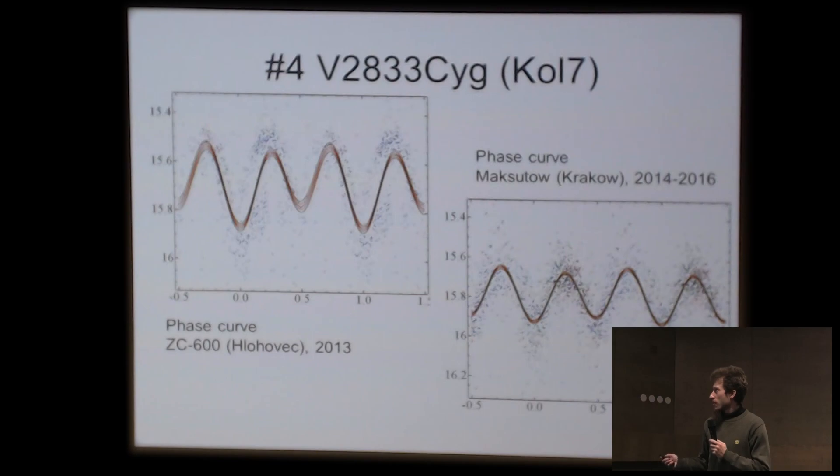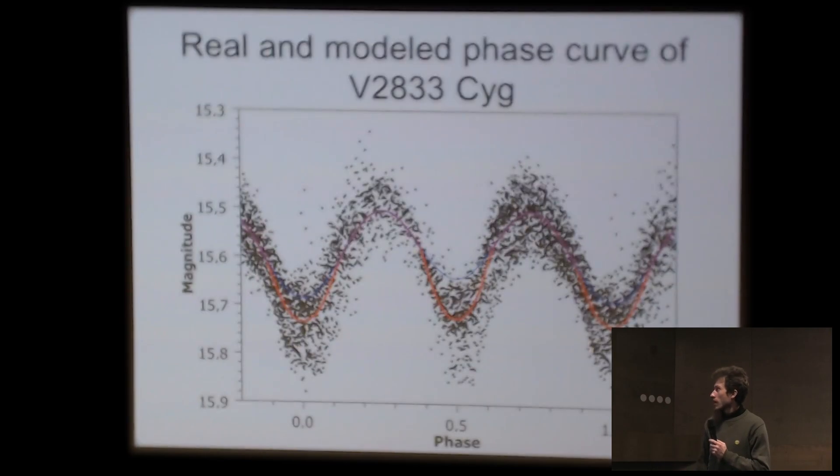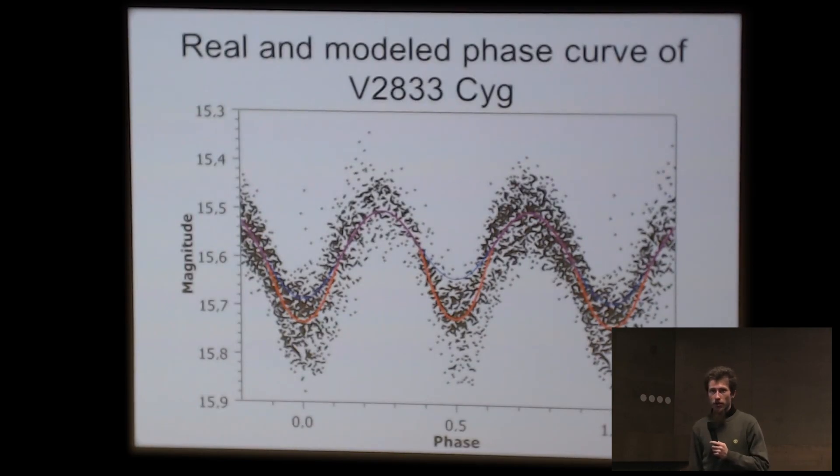This is the light curve from some sources obtained in Blokovitz and Krakow. We modeled these light curves of this object and the next one using the new Algol variable algorithm developed by Professor Andronov. Here you can see the normal phase curve consists of dots, and the modeled curve of this object is the line.